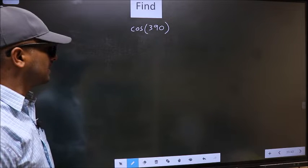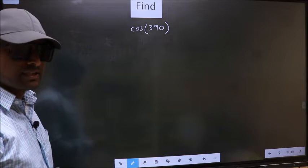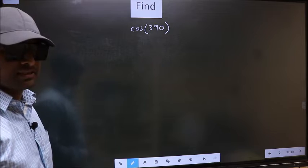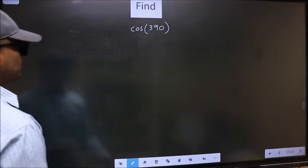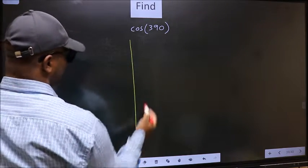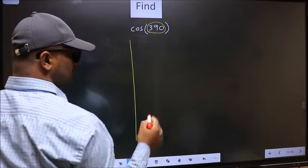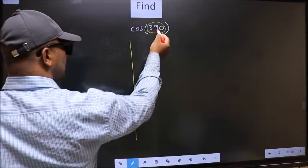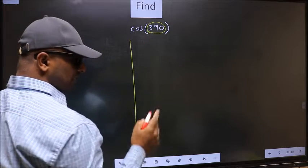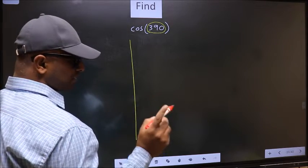To find cos(390°), we should follow this method. First, we need to check where 390 lies between which two multiples of 180.